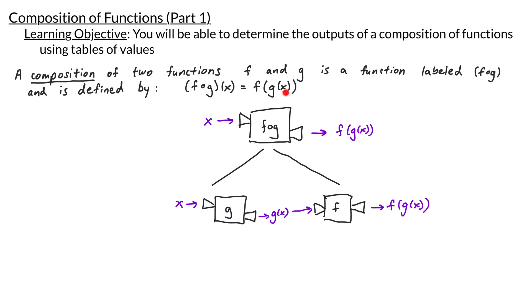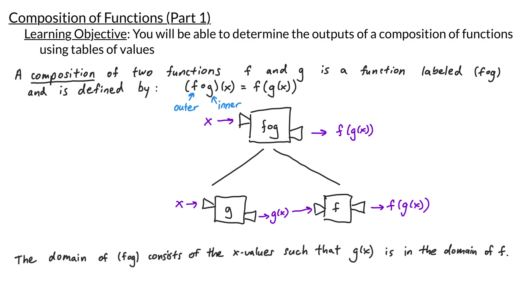When we look at the formula for the composition, we see that g of x is plugged inside the f function. For that reason, the g function is sometimes called the inner function and the f function is called the outer function. One last thing to note is that the domain of f composed with g consists of the x values such that the output g of x is in the domain of f. This means we're looking at x values that we can first plug into g, but also that the output from g is something that we can plug into f.